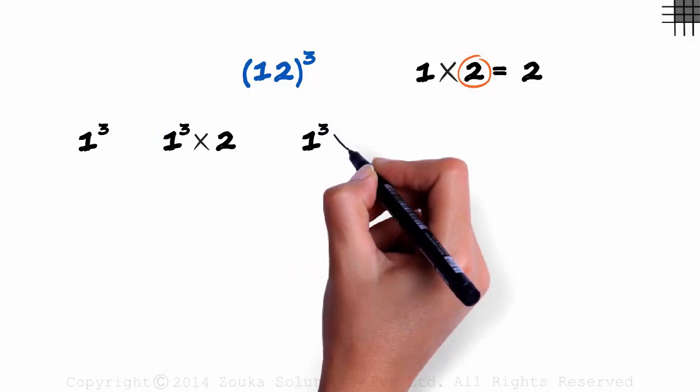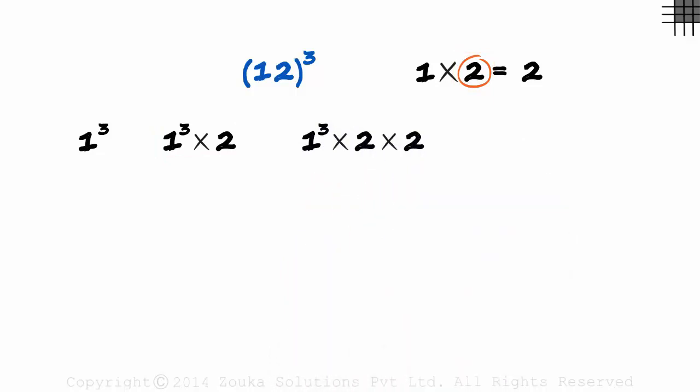That gives us 1³ multiplied by 2 multiplied by 2. And in the fourth and the last column, we multiply this product with this number again. Cube of the tens digit, multiply it with 2, then multiply this with 2 and then multiply this with 2.